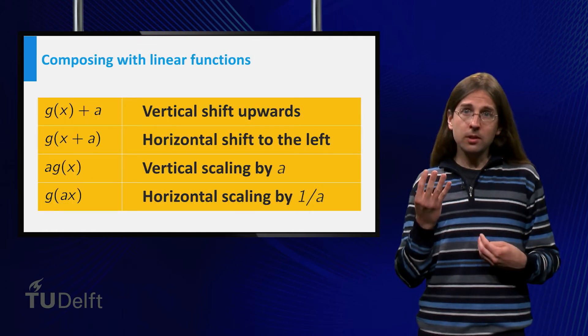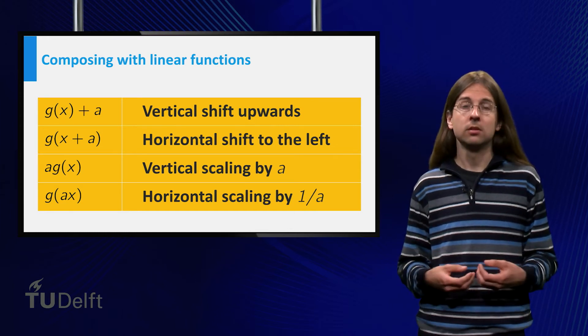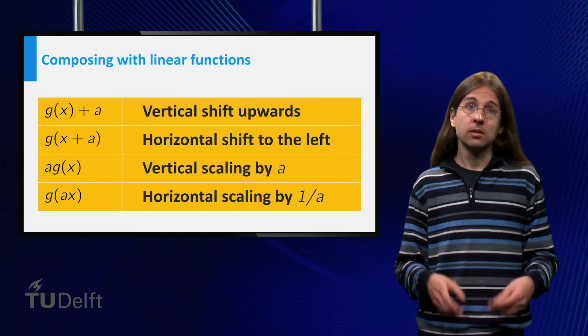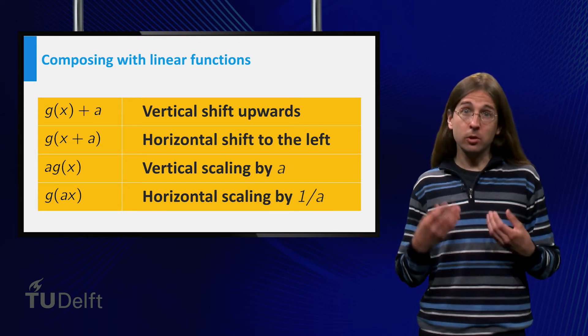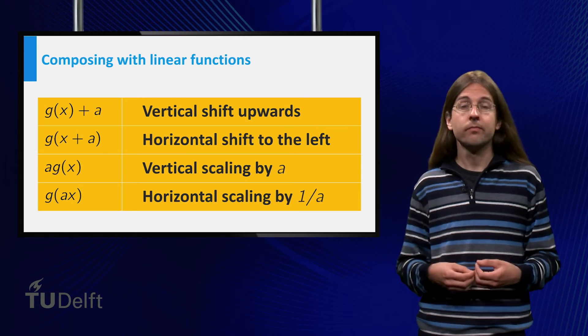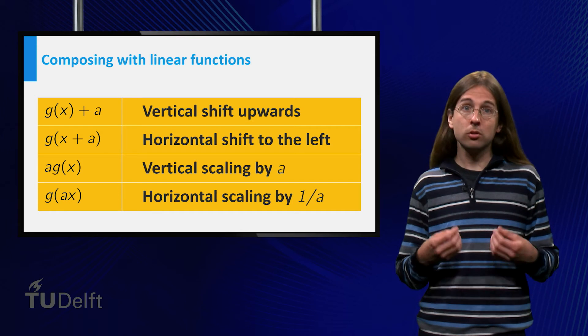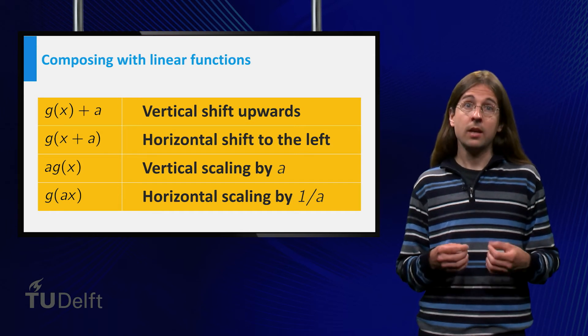We have seen 4 different compositions with separate results for what happens to the graph. g of x plus a gives a vertical shift of the graph a upwards. g of x plus a gives a horizontal shift of the graph a to the left.